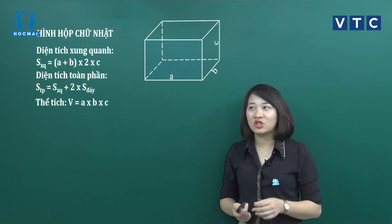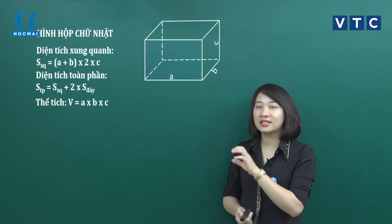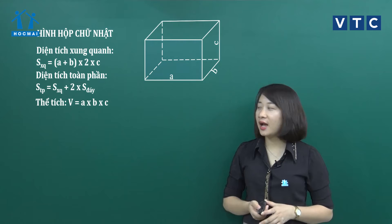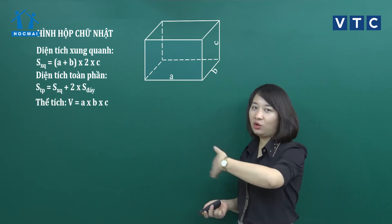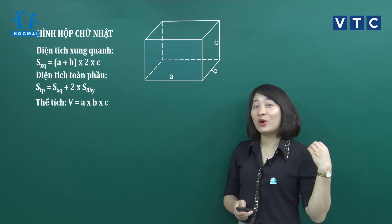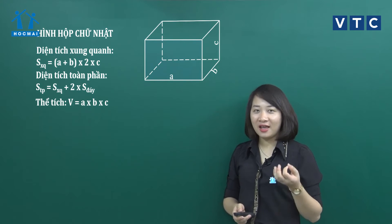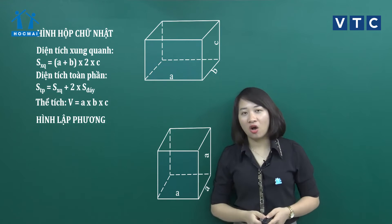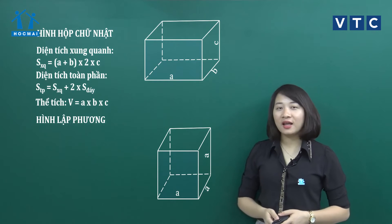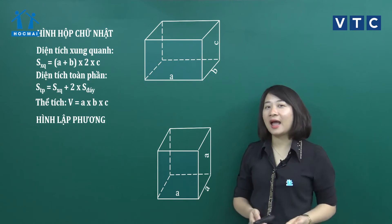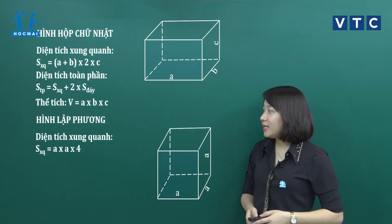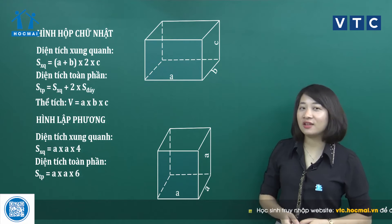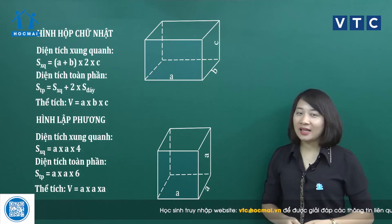Các bạn ghi chép hoặc cho video dừng lại tại những phần cần tóm gọn công thức và ghi đầy đủ vào vở. Với hình lập phương thì có 6 mặt đều là hình vuông, các hình vuông này có chung độ dài cạnh là A. Diện tích xung quanh là A x A x 4, diện tích toàn phần là A x A x 6, và thể tích là A x A x A.